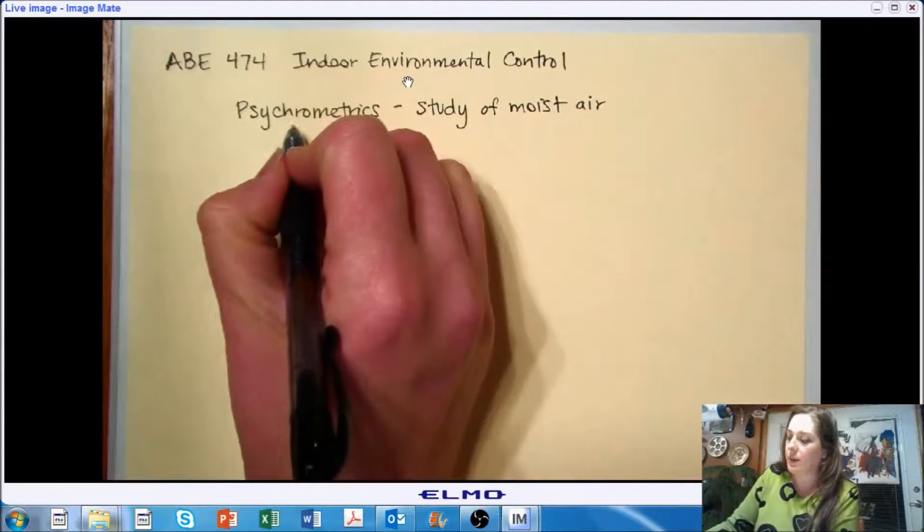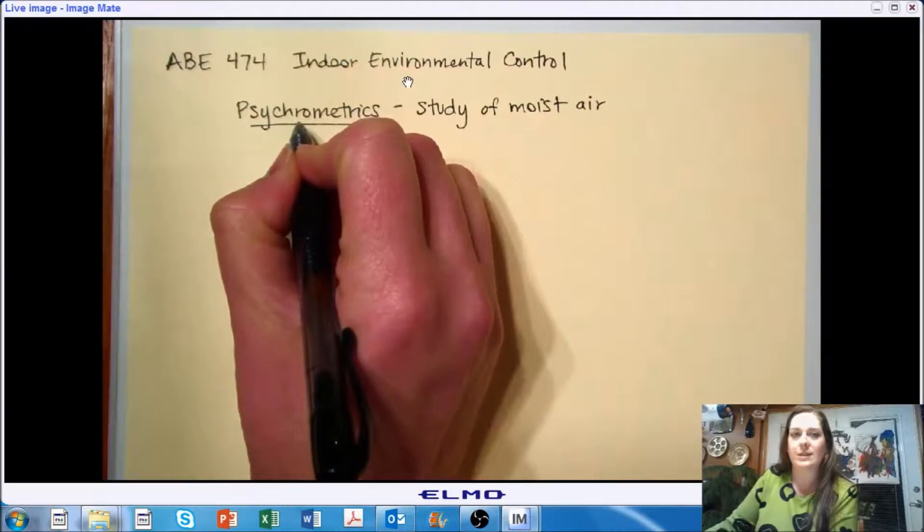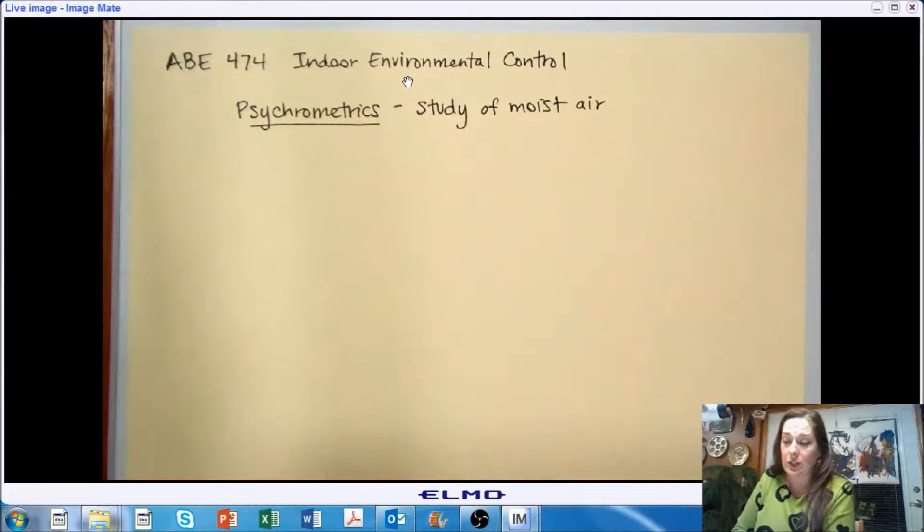Please note the spelling of psychrometrics. There is an R in there. Pretty important. Your word processor is going to want to try to change this to psychometrics, most likely, or just outright reject it, so you may need to do some programming there.